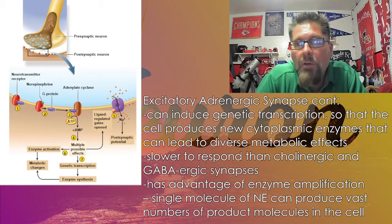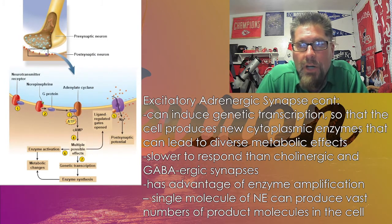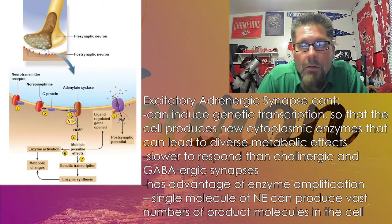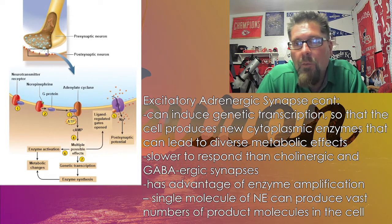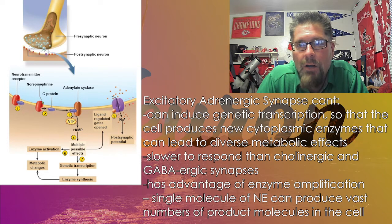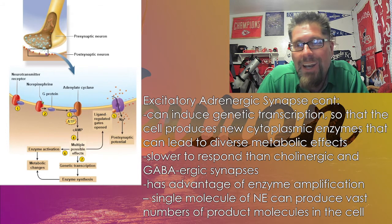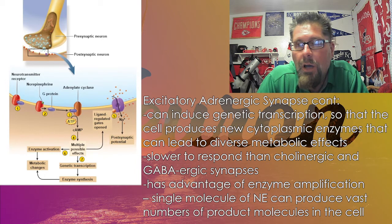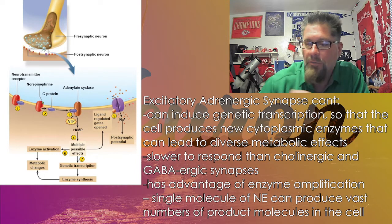When you compare the adrenergic synapse to the other two, not only is there greater variability in what enzymes and effects it can produce, but it's also a slower process. One molecule of norepinephrine can produce lots and lots of different things, making it pretty diverse in its functions.